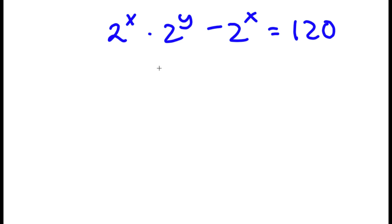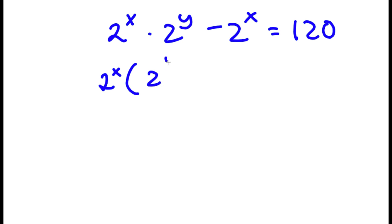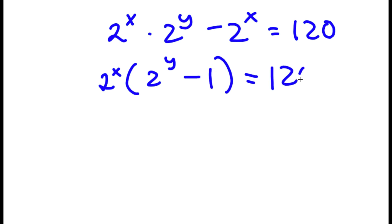Now I'm going to factor out 2 to the power of x from the left-hand side. So I have 2 to the power of x times — 2 to the power of x times 2 to the power of y divided by 2 to the power of x is simply 2 to the power of y, and negative 2 to the power of x divided by 2 to the power of x is negative 1 — so this equals 2 to the power of x times (2 to the power of y minus 1) equals 120.